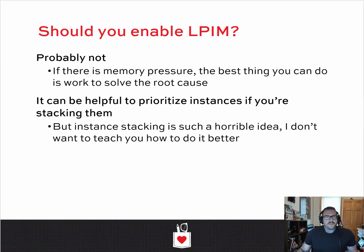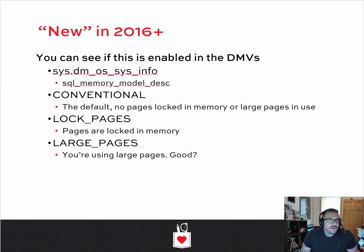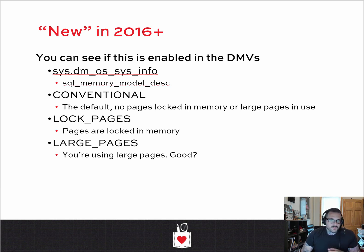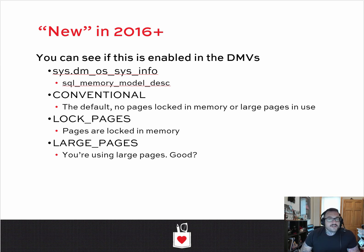New in SQL Server 2016 is the ability to see if you have any memory settings changed from the default in the DMVs. If you go into sys.dm_os_sys_info and select all the way at the end, there are a couple of columns: the SQL Memory Model column and the SQL Memory Model Description column. I prefer the description column because that's where the human-readable English words are. There are three possible states: 'conventional,' which is the default and means you're not locking pages in memory and not using large pages; 'lock pages,' which means pages are locked in memory; and 'large pages,' which means you have enabled large pages and turned on trace flag 834.